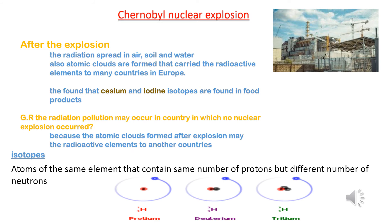After the Chernobyl nuclear explosion, radiation spread in air, soil, and water. Atomic clouds formed and carried radioactive elements to many countries in Europe. Caesium and iodine isotopes were found in food products. Isotopes are atoms of the same element that contain the same number of protons but a different number of neutrons.